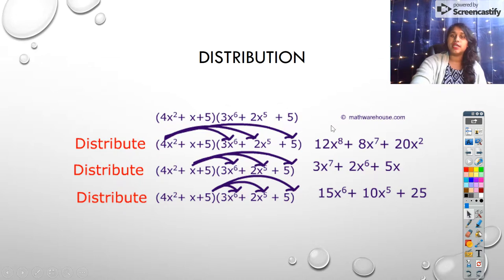Here's what distribution looks like. Here's our original question. I'm taking that first term and distributing it to all three terms in my second polynomial, take that middle term, distribute it, and finally take that last term and distribute it. I went ahead and color-coded it.